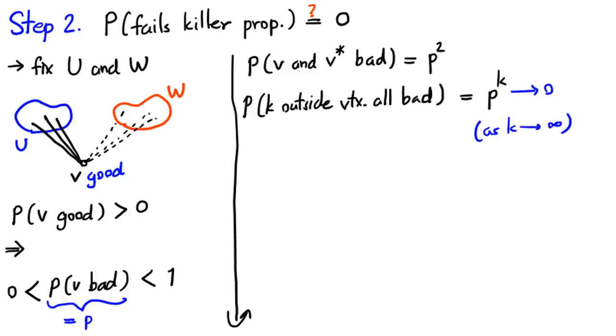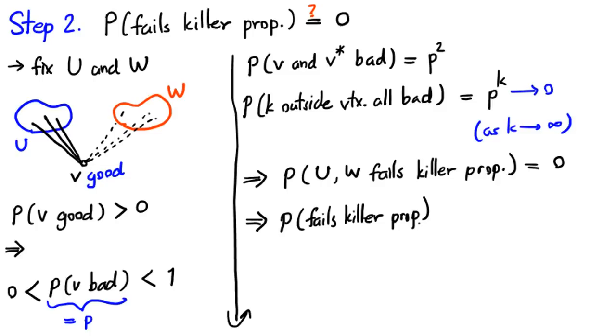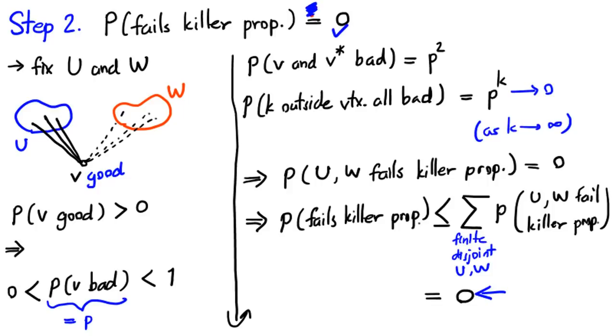Therefore, the probability that U and W fail to satisfy the killer property is indeed 0. Now we are ready to compute the probability that the original random graph fails to satisfy the killer property. Note that this probability is at most the sum of probabilities that U and W fail to satisfy the killer property, where the summation is taken over all finite disjoint subsets U and W. Since each summand is 0 and there are countably infinite summands, indeed, the probability that our random graph fails to have the killer property is also 0.